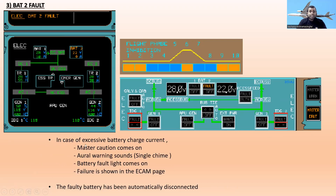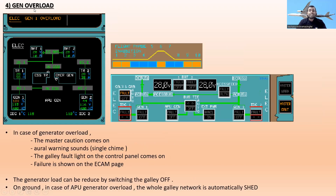The next one is battery two fault. In case of excessive battery charge current, master caution comes on with a single chime oral warning, and the battery fault light comes on. The failure is shown amber on the ECAM page — ELEC BAT 2 fault. The same failure messages apply if BAT 1 also fails. In this situation, the fault battery has been automatically disconnected.